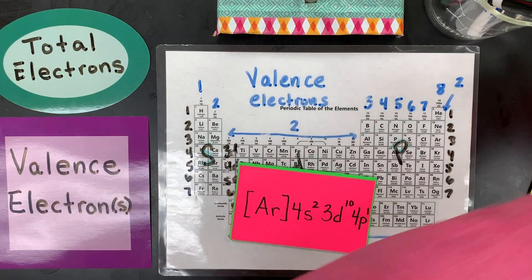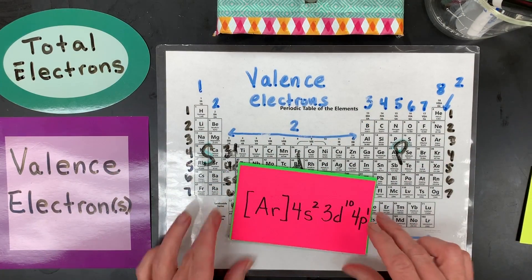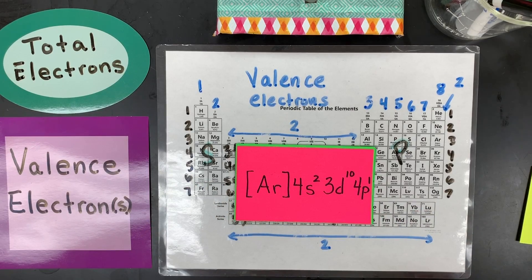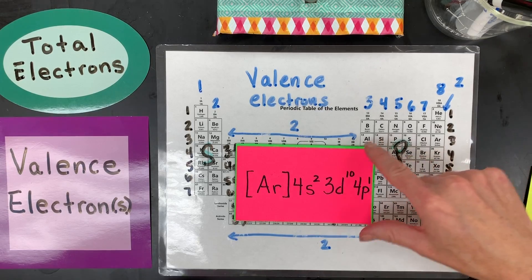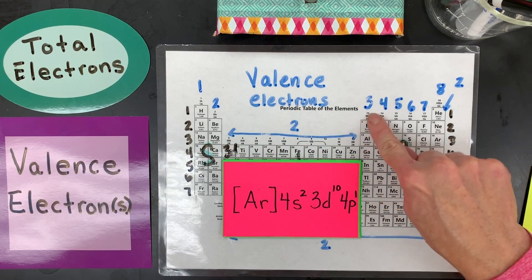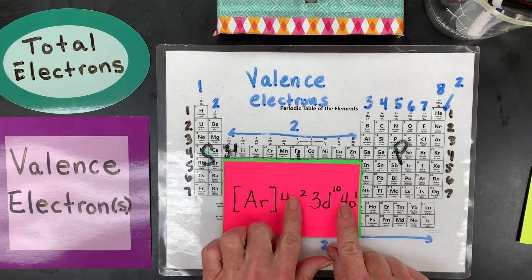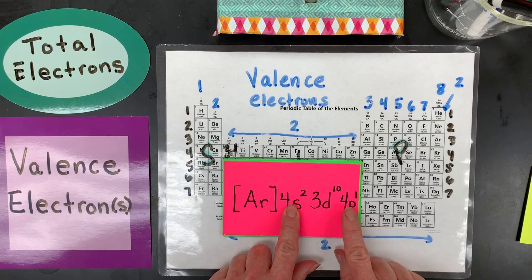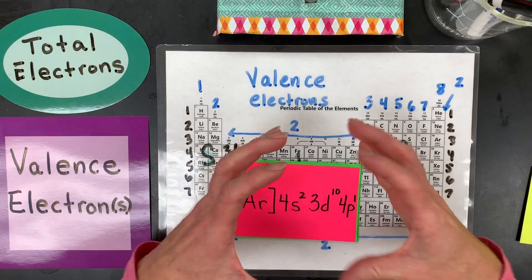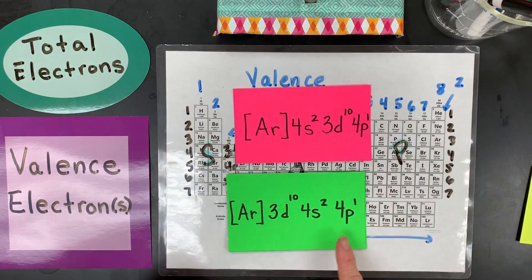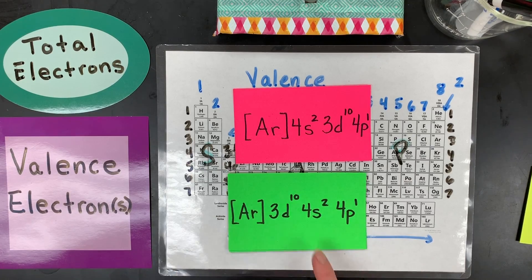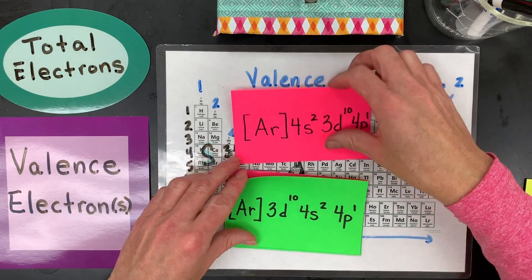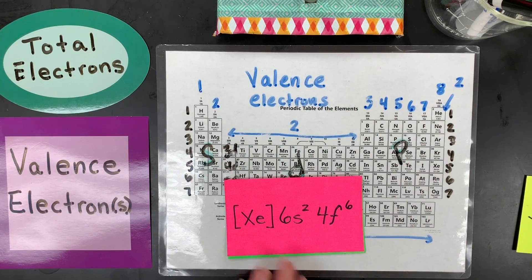Here's another one — see what you think. This element goes out to 4p1: s-block fills 1, 2, 3, 4, then p1. So you know it's gallium. Valence? It's three — the 4s2 and 4p1 are both at the fourth level, the outermost level, which gives 2 + 1 = 3. Some teachers write it with the d block first, which makes the outer electrons more visible, but either way the answer is three.